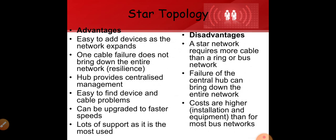Disadvantages of star topology: star networks require more cables than ring or bus networks, which means higher costs. If we are using more cable wires, we are spending more money. Failure of the central hub can bring down the entire network — if one regular computer fails it won't affect the network, but if the central hub fails the entire network goes down. Installation and equipment costs are also higher than for most bus network configurations.